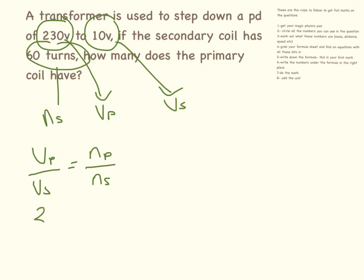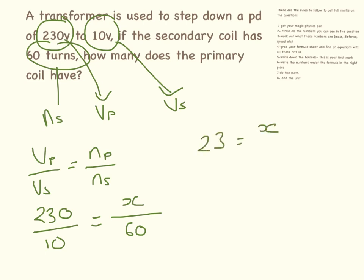So Vp is 230, Vs is 10. We're trying to find Np but we know Ns is 60. So 230 divided by 10 equals x divided by 60. Rearranging: 23 times 60 equals x. So x equals 1380 turns.